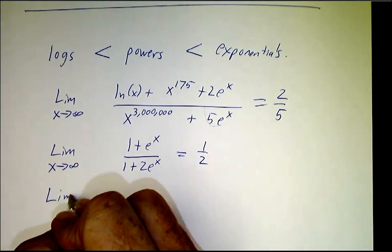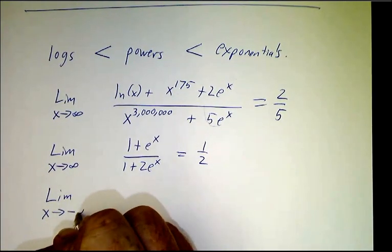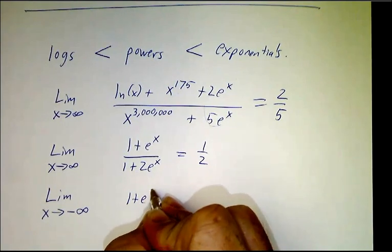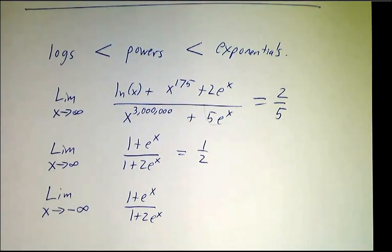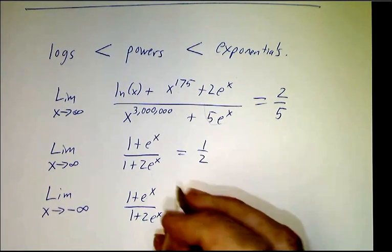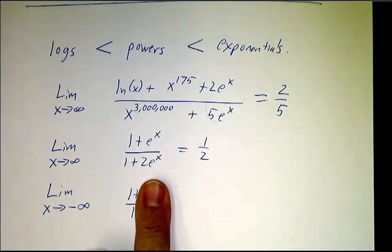On the other hand, if I want the limit as x goes to minus infinity of 1 + e^x over 1 + 2e^x, now this isn't growing exponentially, it's shrinking exponentially. You plug in a large negative number and e to a negative power is tiny. So you get something close to 1 divided by something close to 1. Now it's the 1 that's bigger.